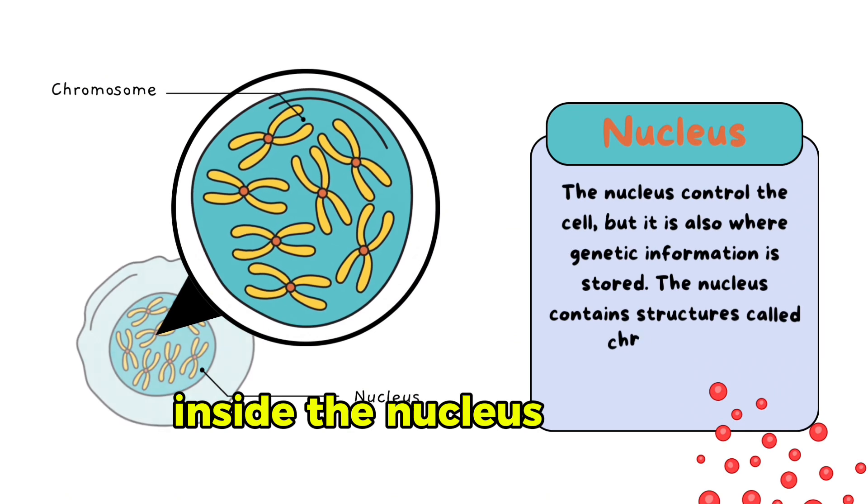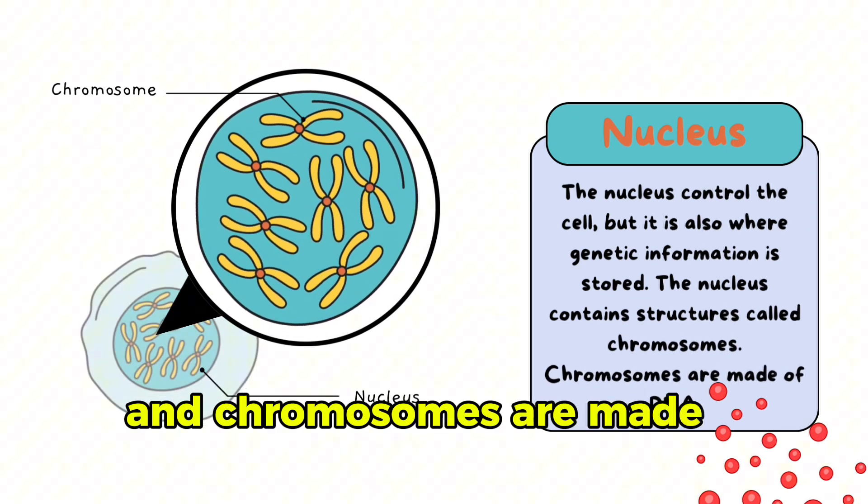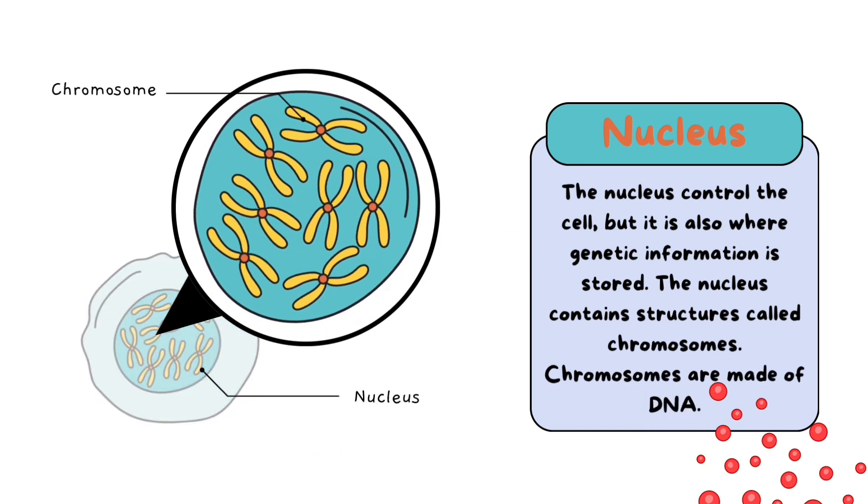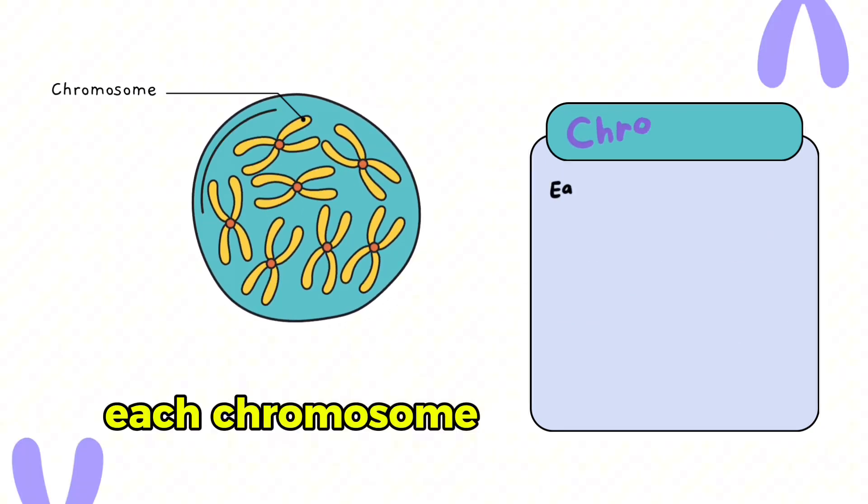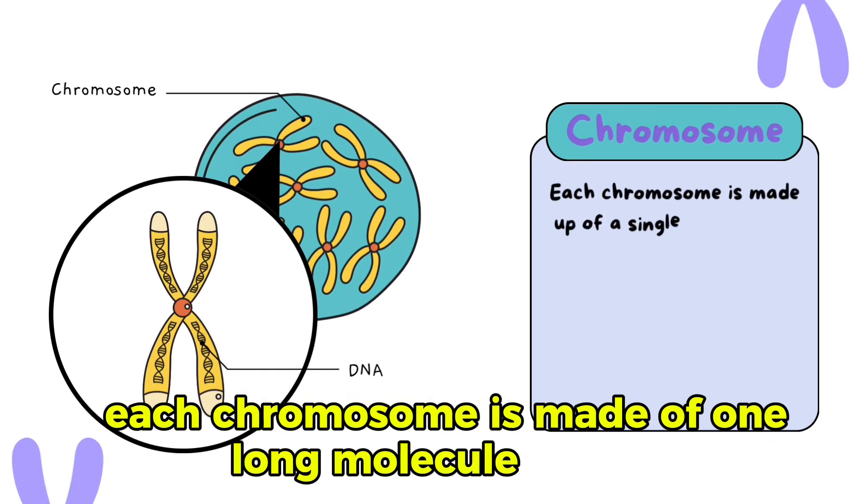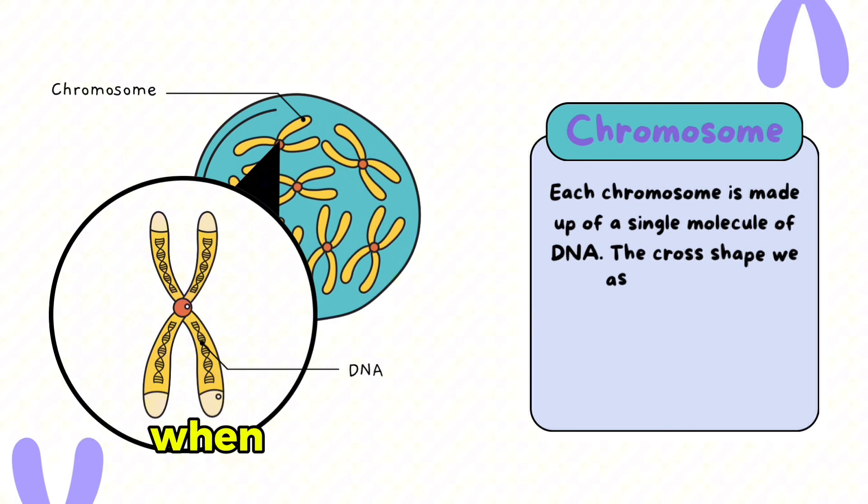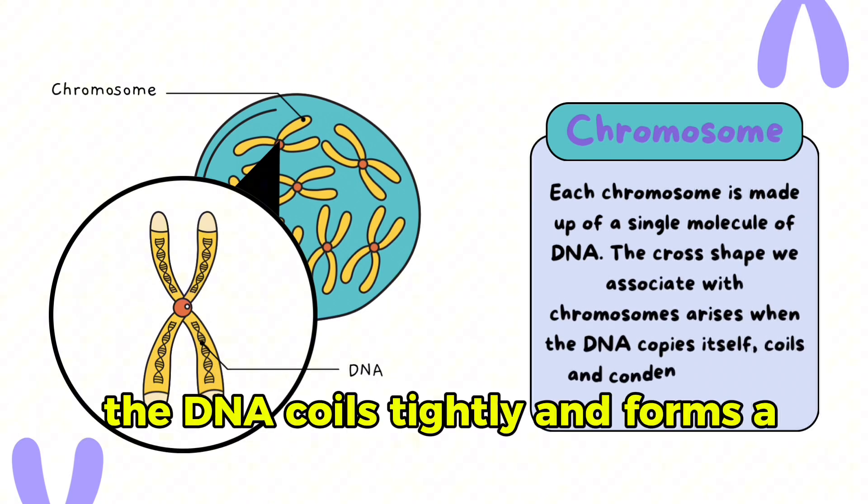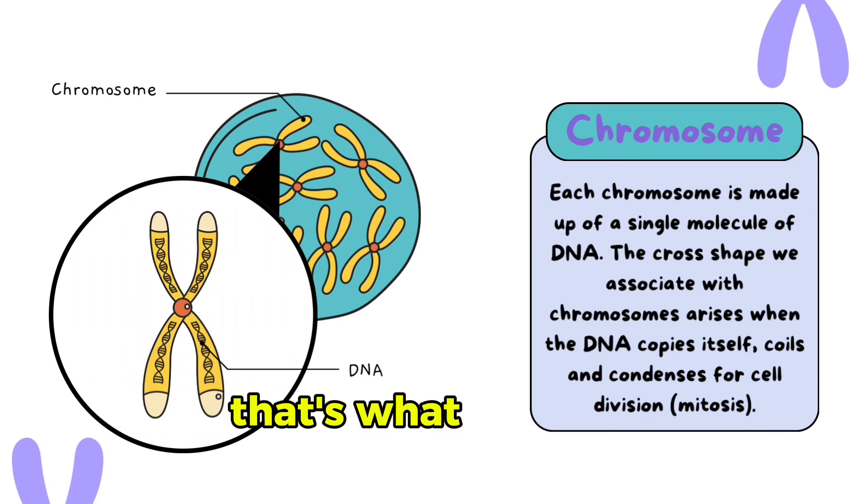Inside the nucleus, we find chromosomes, and chromosomes are made of DNA. Each chromosome is made of one long molecule of DNA. When a cell is ready to divide, the DNA coils tightly and forms a familiar X shape. That's what we call a chromosome.